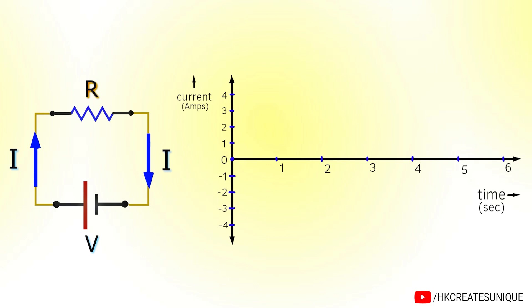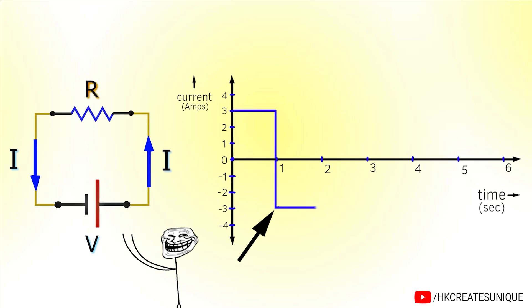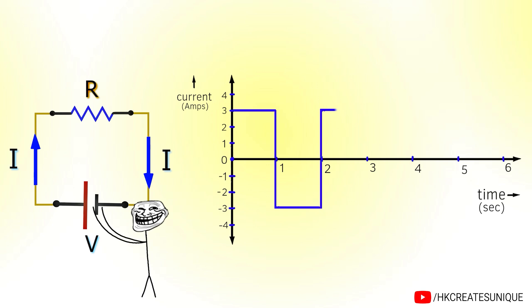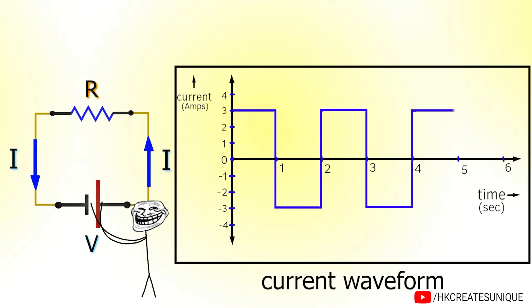Let's take the simplest example of alternating current. Right now current is in the positive direction. But as time passes, reverse the battery polarity. This time current flows in the other direction which means that it is negative. Again after some interval of time, reverse the polarity of battery. If you repeat this process again and again, you can see this kind of current waveform in the circuit.